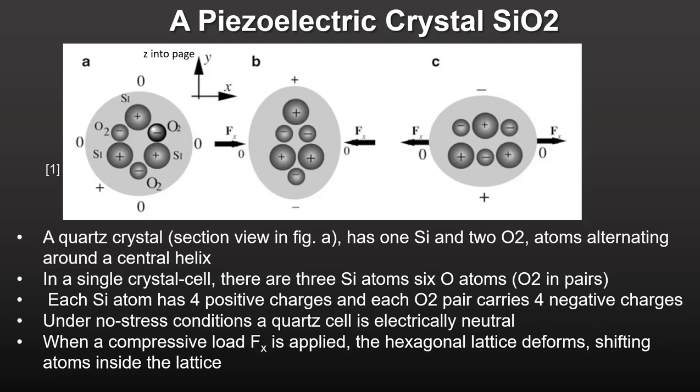In this simple model of the piezoelectric effect shown in this diagram, a quartz crystal is modeled as a helix with repeating single silicon and dual oxygen atoms. This view is a cut of the crystal as seen along the axis of the helix. In a single crystal cell, there are three silicon atoms and six oxygen atoms. Each silicon atom has four positive charges, and each O2 pair carries four negative charges. With no mechanical stress, each quartz cell is electrically neutral.